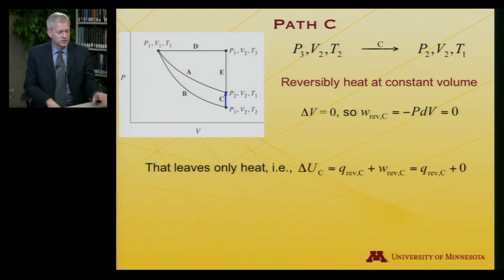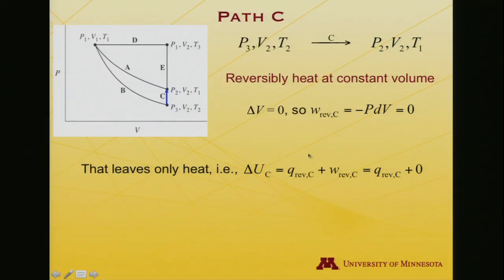So we have only heat, and so delta U along path C is going to be heat plus work, but work is zero, so it's just the heat. Once again, I'll play the game of figuring out delta U is the integral of the heat capacity at constant volume, dT. The difference here is that my limits have changed compared to the last slide. I'm now going from temperature 2 to temperature 1, not from temperature 1 to temperature 2. So that's worth emphasizing that it's T2 to T1. So again, that integral is a number. I'm not sure if it's 23.9 or 14.1, but it's a number.